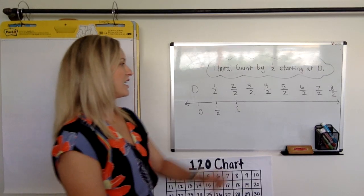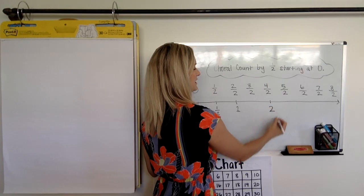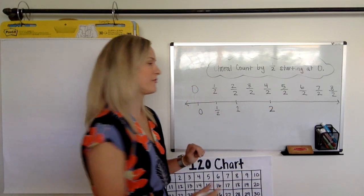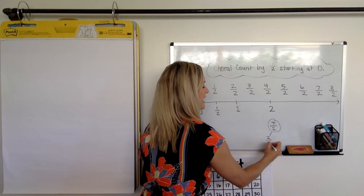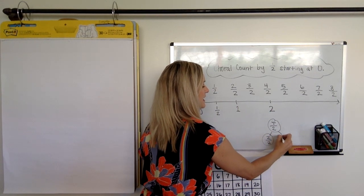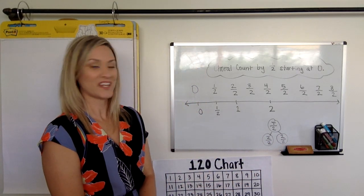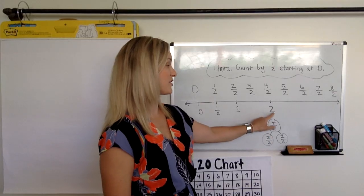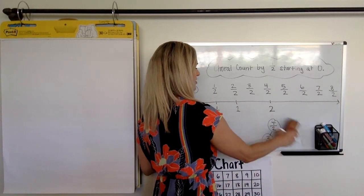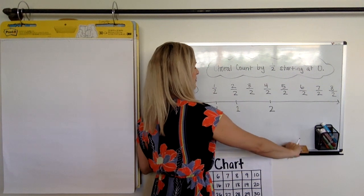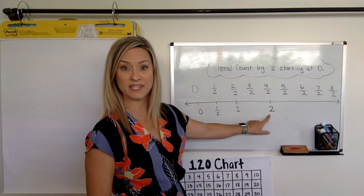I bet I know what somebody's going to say next. I bet somebody's going to say, I notice that there's also the whole number two. Because four halves, if I put it in a number bond, is made up of two halves and two more halves. Is that true? So two halves plus two halves makes four halves, so that makes one and two. So far, you've probably noticed that we have zero, we have one, we have two. Do we have a three?